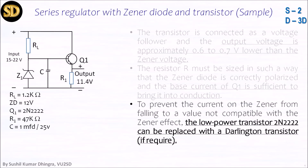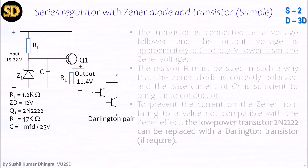To prevent the current on the Zener diode from falling to a value not compatible with the Zener diode effect — if we are using more current and more capacity than this transistor is capable of driving such a load — then we have to use a more powerful transistor, or a Darlington transistor is required. A Darlington pair consists of two transistors working in cascade, as shown on your screen.